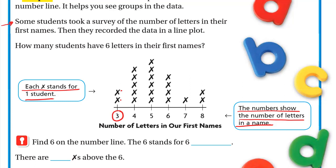Find six on the number line. The six stands for six letters. There are how many X's above the six? Above the six we have one, two, three, four X's. So four students have six letters in their first names.